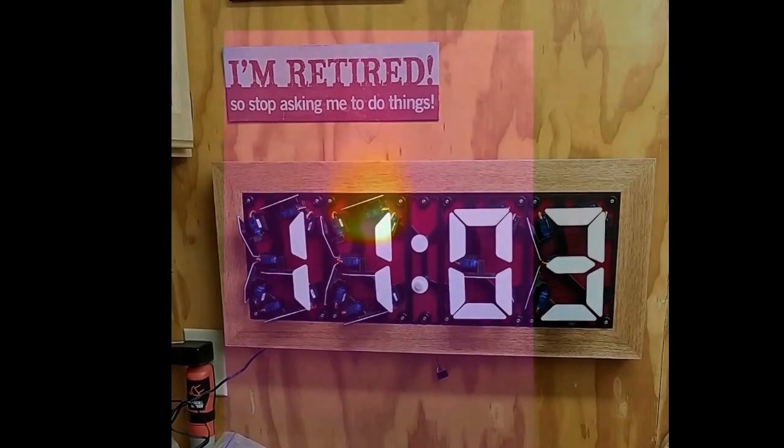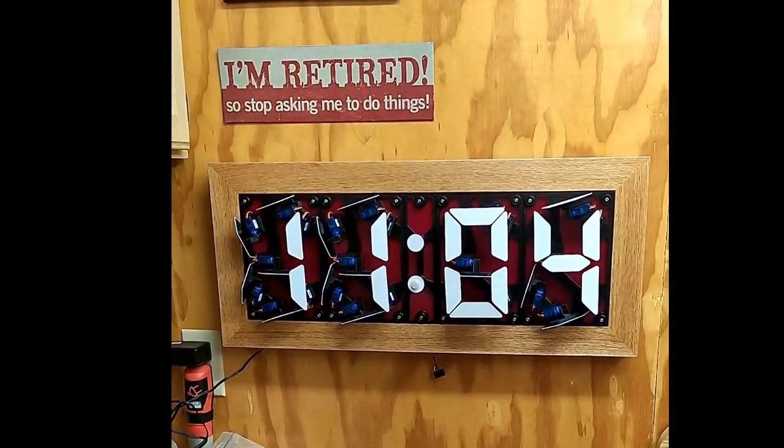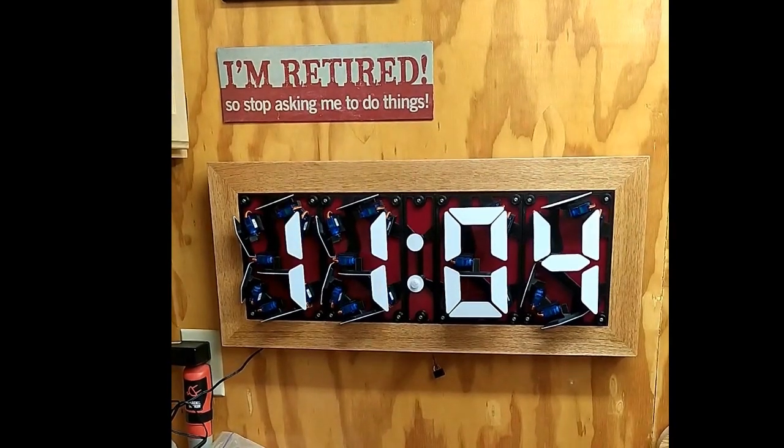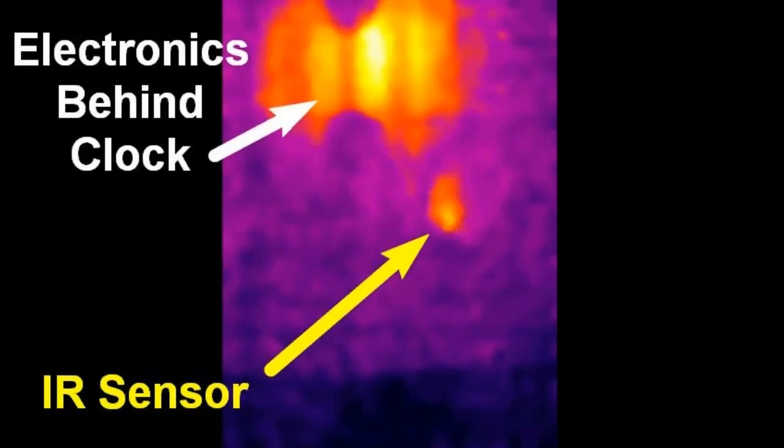And if I look at the servo clock that I made last year, the electronics are behind that piece of plywood, but it's heating up the plywood because those are always on. And down in the lower center part is an infrared sensor. And that gives off a very slight heat signature because it is always on.